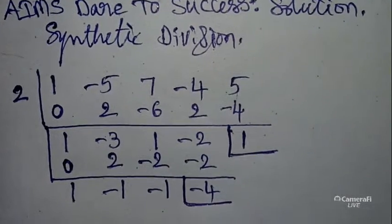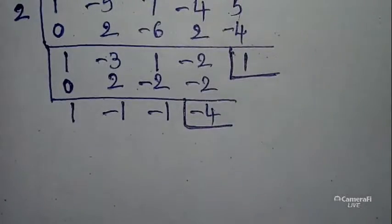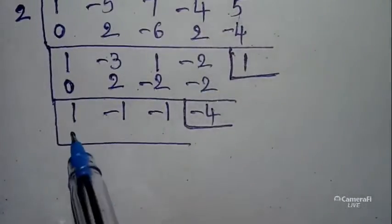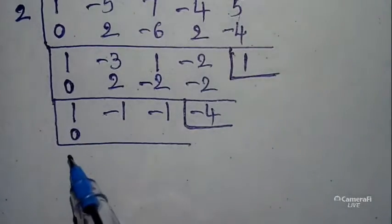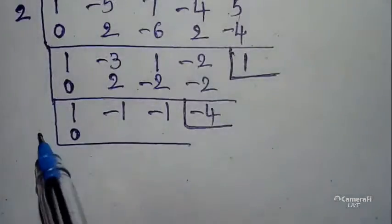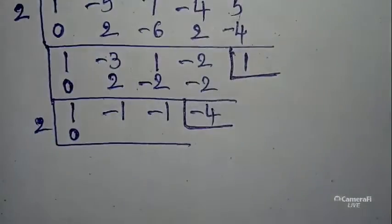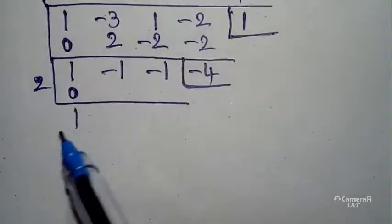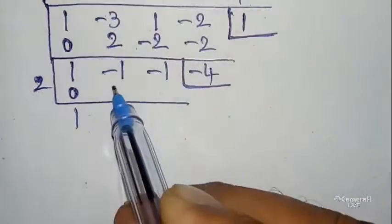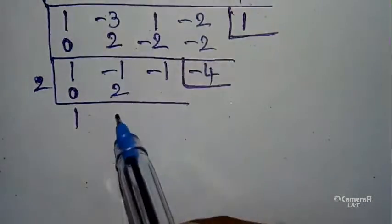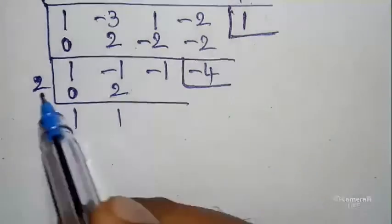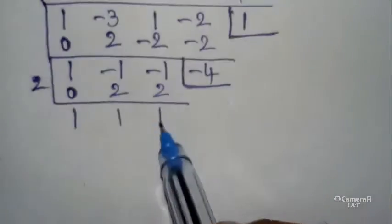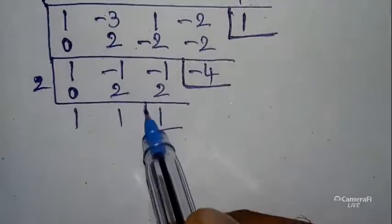Take one more box and keep 0 the same, place 2 here. 1 + 0 = 1. Cross multiply: 2 × 2 = 4? Next addition: 2 + (-1) = 1. Cross multiply: 2 × 2. Next addition: 2 + (-1) = 1. Keep this — I will tell you later about these numbers.